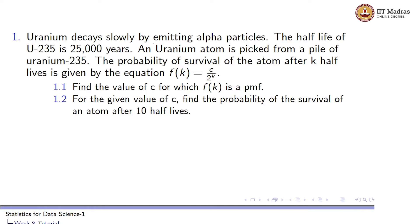Uranium decays slowly by emitting alpha particles. The half-life of U-235 — this is the nomenclature for uranium U-235 — is 25,000 years, and a uranium atom is picked from a pile of uranium-235. Let's assume that we have an infinite number of uranium atoms and from that we pick one particular atom. The probability of survival of the atom after k half-lives is given by the equation f(k) = c / 2^k. Find the value of c for which f(k) is a PMF.